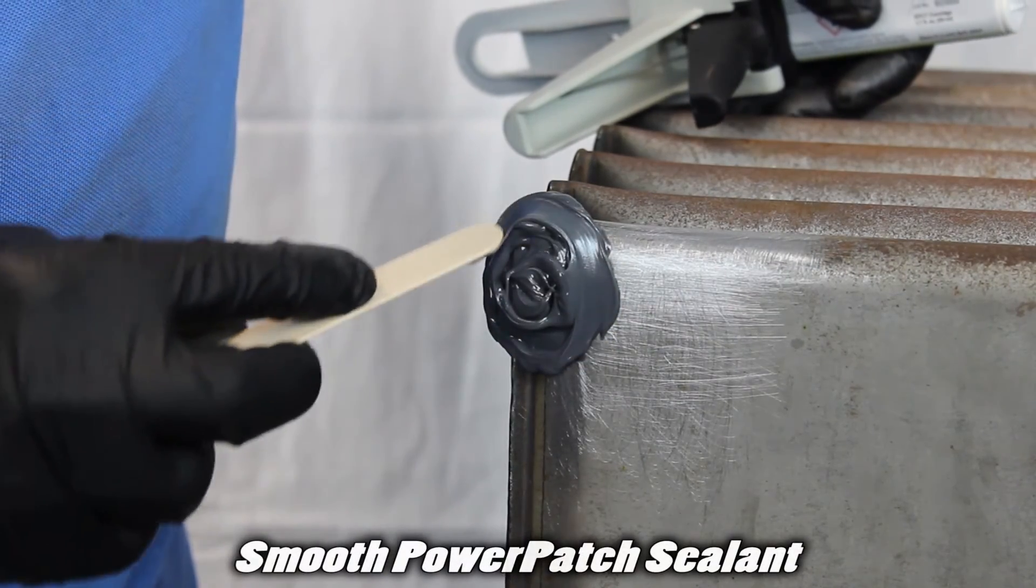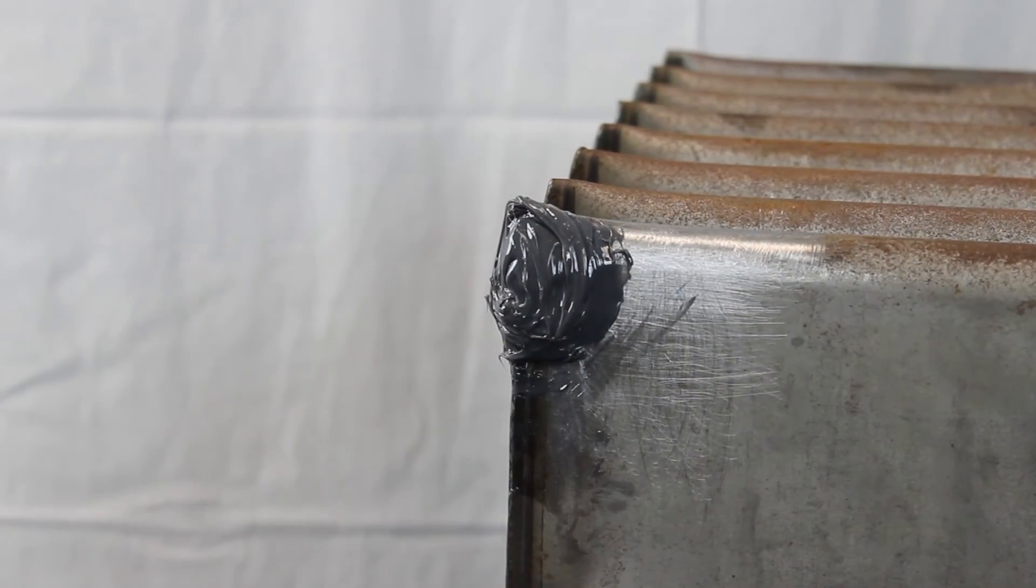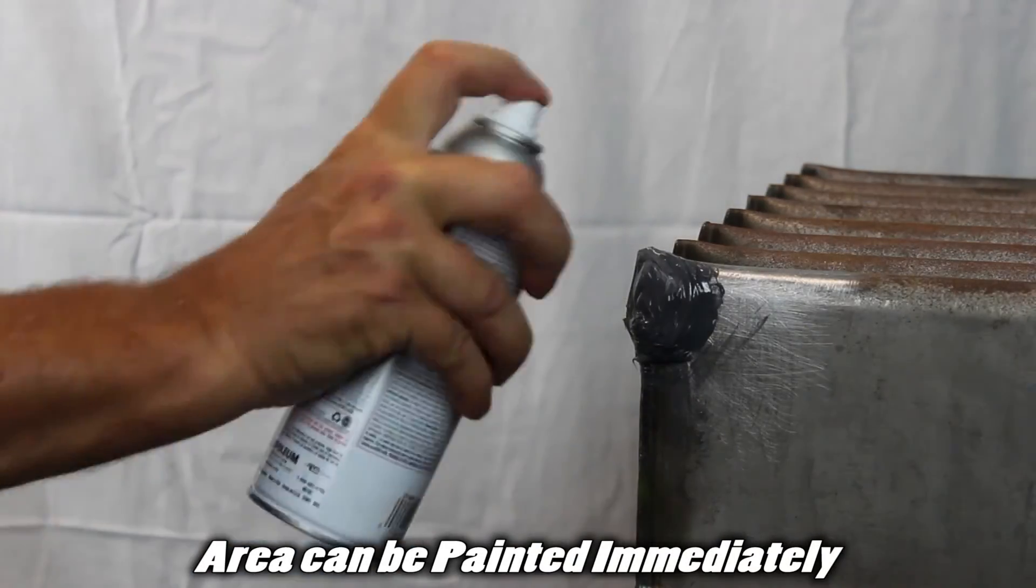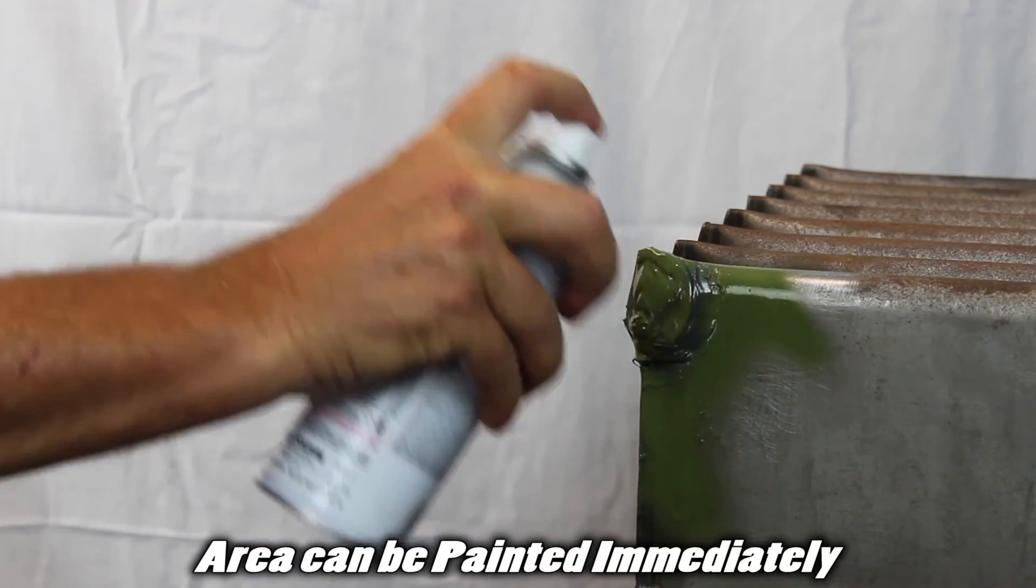Smooth power patch sealant edges. The repair is done. The area can be painted immediately. Power patch does not need air to cure.